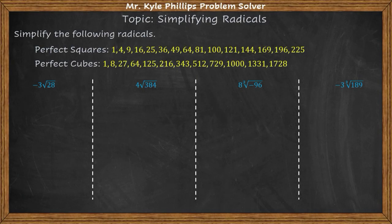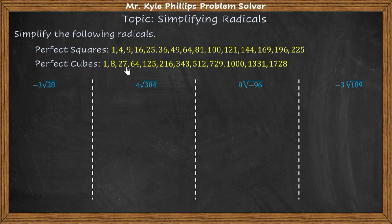In this video we're going to be talking about simplifying radicals. We have an example where we have negative 3 times the square root of 28. Anytime you're simplifying radicals you always want to use perfect squares or perfect cubes depending on the radical. If there's no index it's understood to be a square root, so we work with perfect squares. If we see a 3 in the index, that means it's a cube root and we work with perfect cubes.